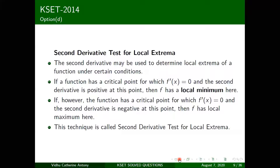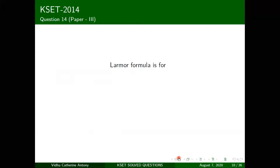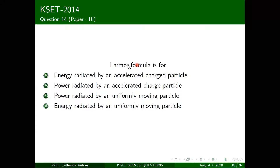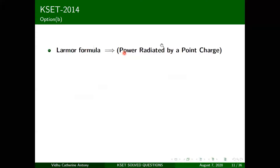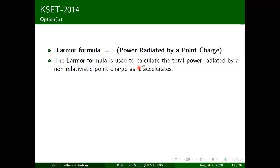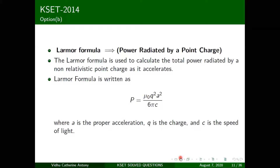The next question asks what the Larmor formula gives. It gives the power radiated by an accelerated point charge. The Larmor formula calculates the total power radiated by a non-relativistic point charge as it accelerates: P = μ₀q²a² / (6πc), where a is proper acceleration, q is charge, and c is the speed of light.